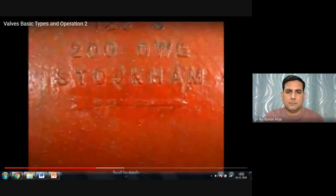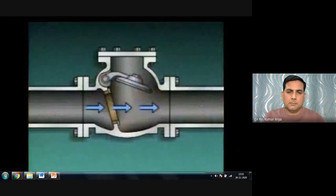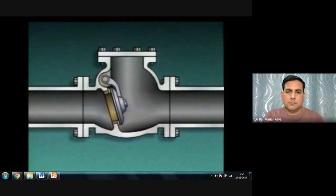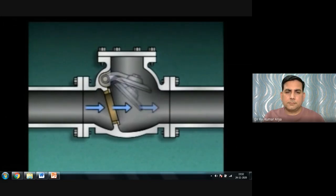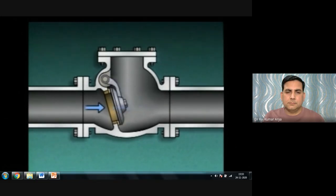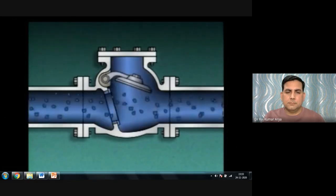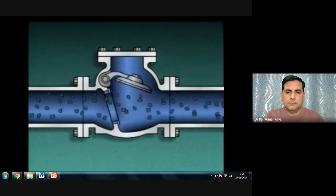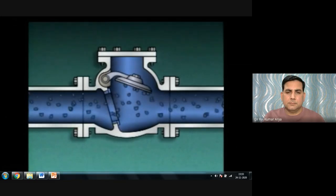As long as flow is constant, the disc remains raised. If flow is intermittent, the disc may repeatedly rise and fall, slamming against the seat. This action can damage the disc and seat, resulting in leakage. This condition can often be detected because the slamming produces noise and vibration in the piping. If you detect this kind of problem, report it to your supervisor. Swing check valves also aren't effective for fluids containing solid particles, as solids can accumulate between the disc and seat and prevent closure.